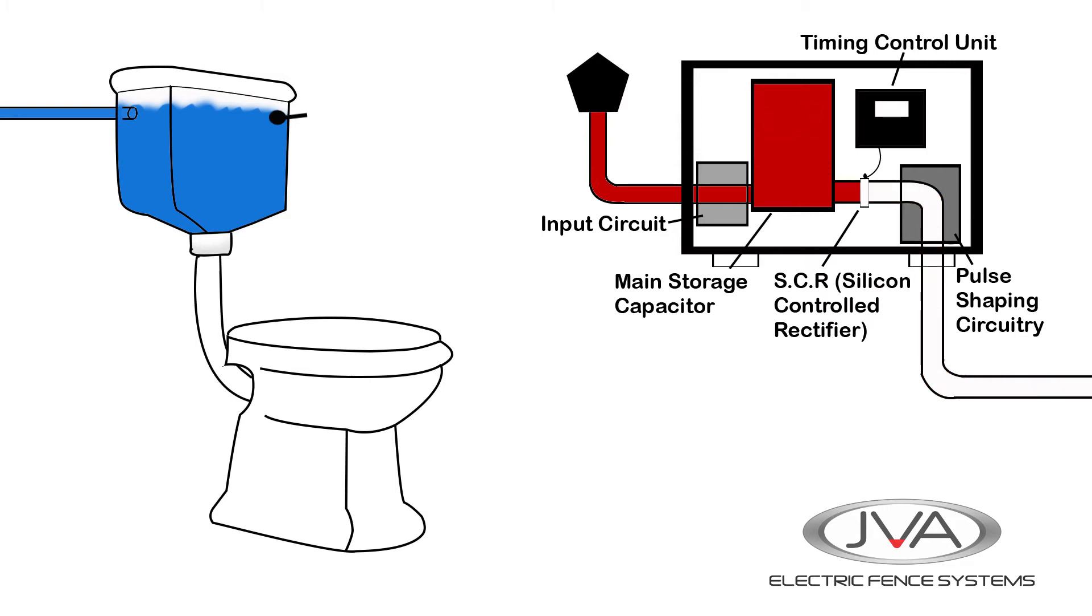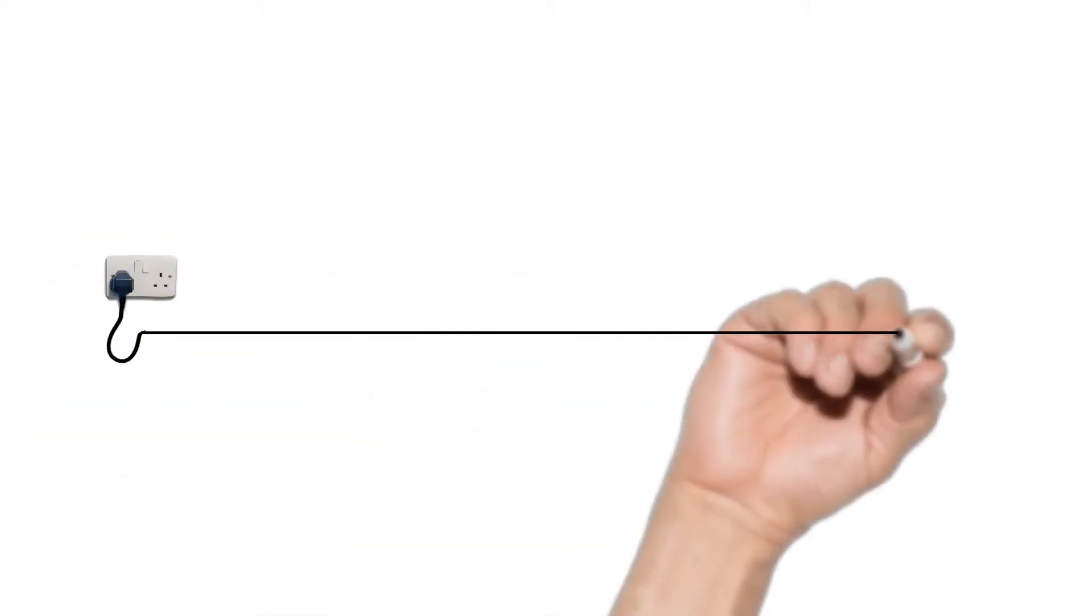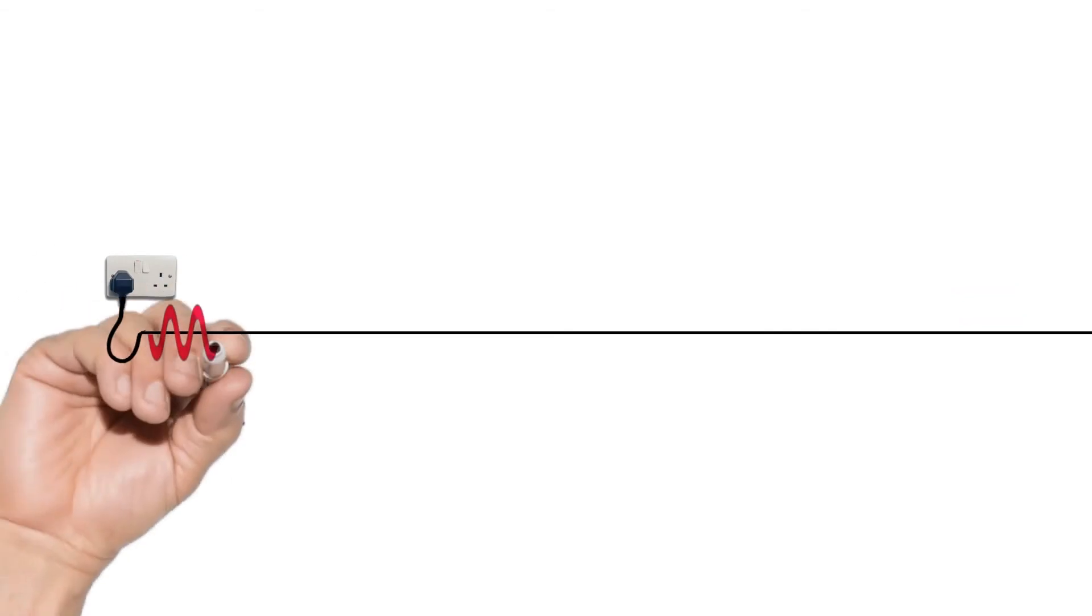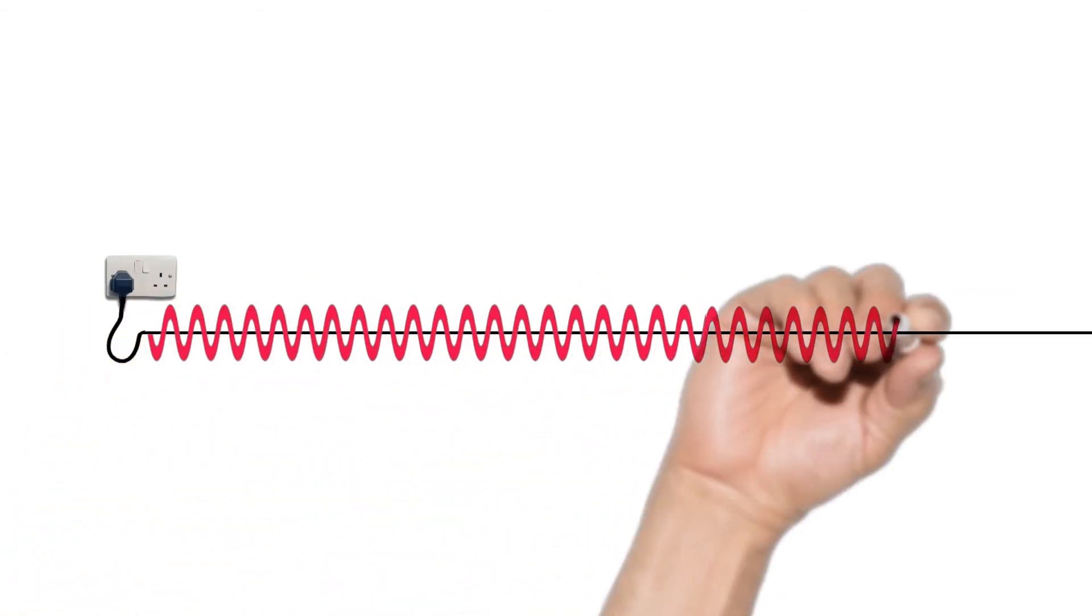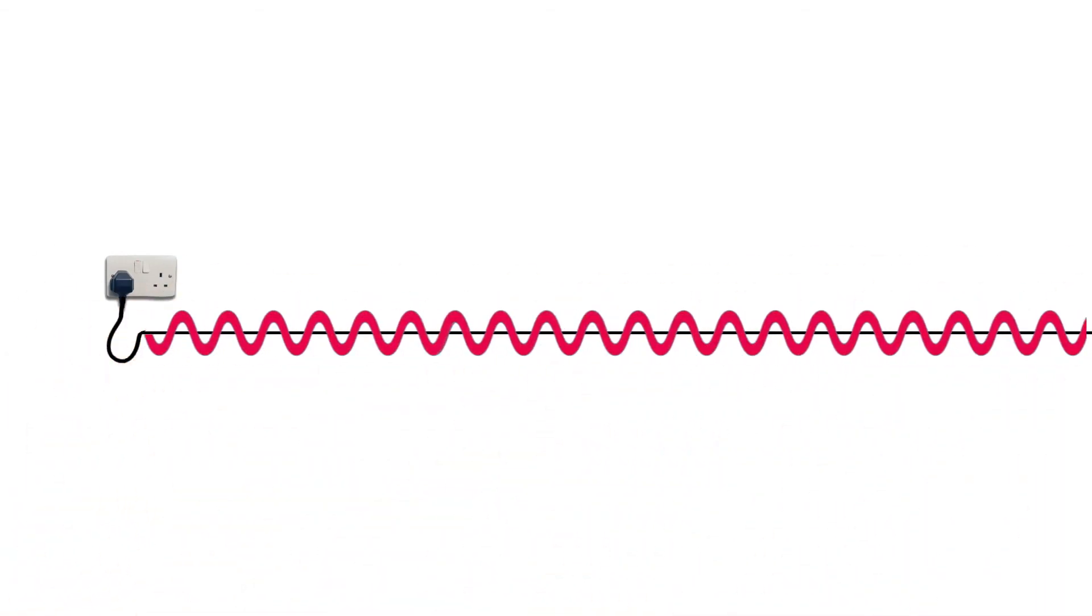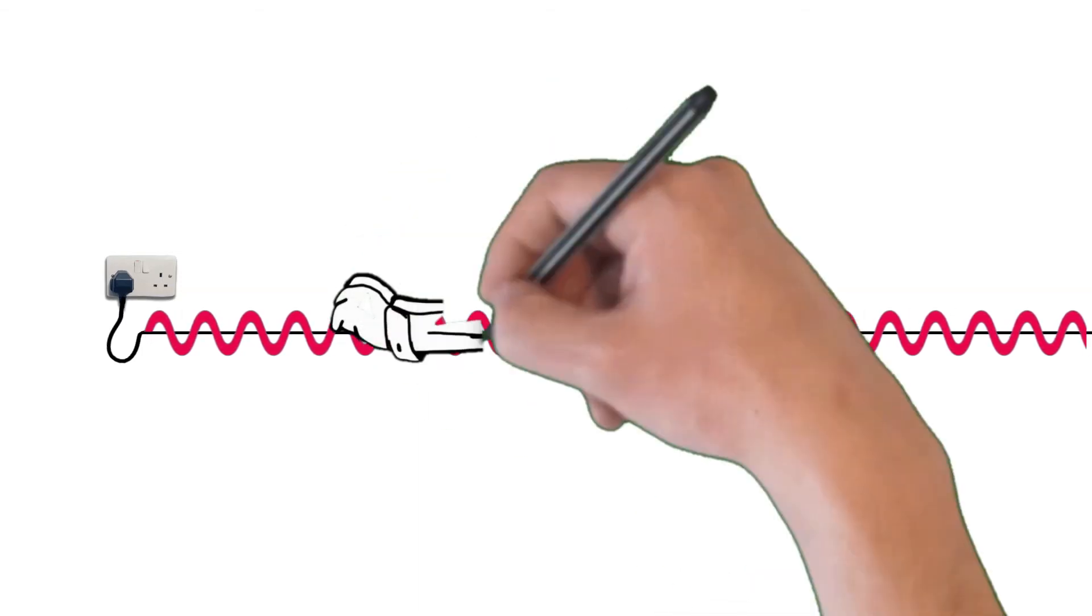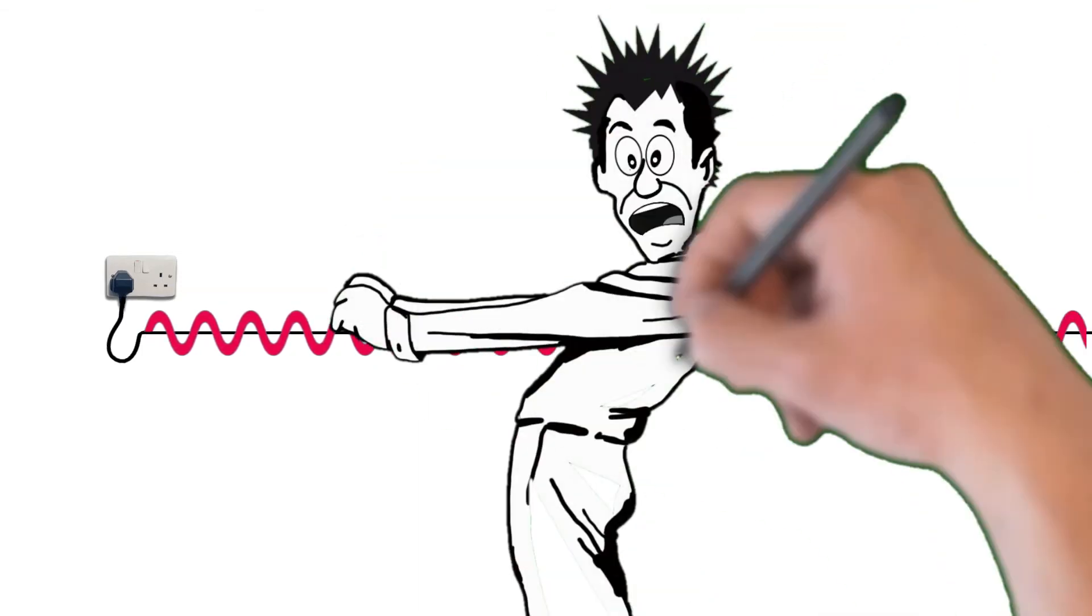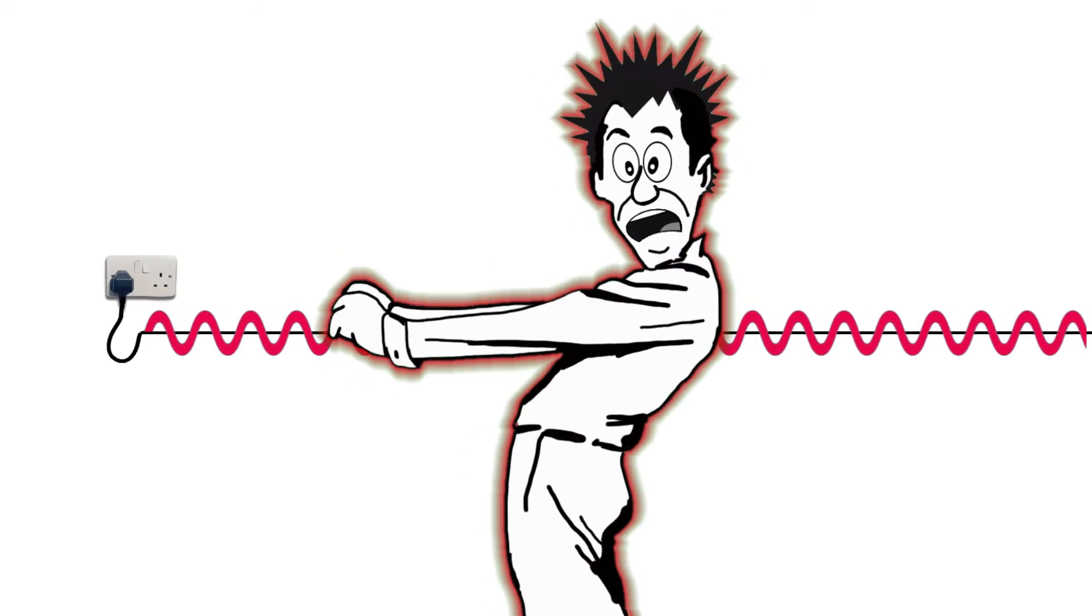This pulse will travel down the electric fence at around half the speed of light. If an electric fence was just a wire plugged directly into the AC mains, you would have a constant voltage on it. If you were to touch this wire you would get shocked constantly, you may not be able to let go. It would probably be lethal.